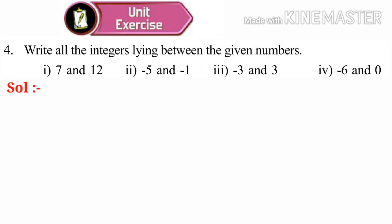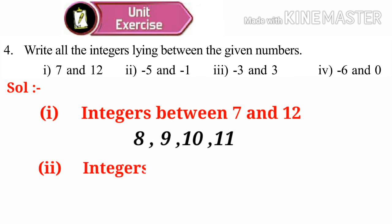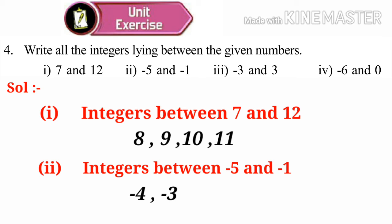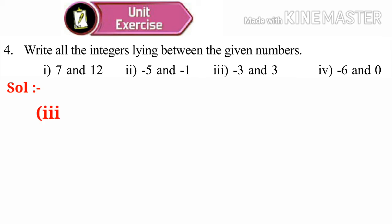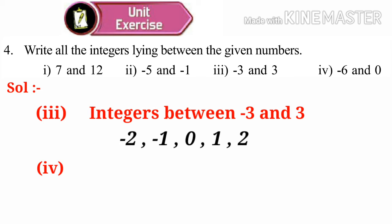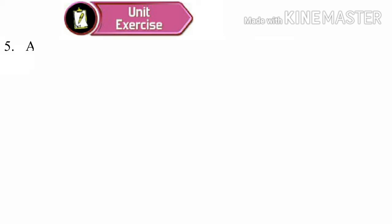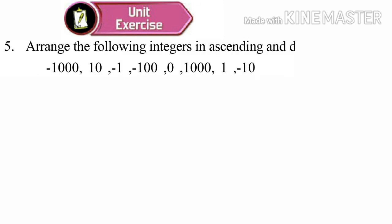Now, fourth problem: write all the integers lying between the given numbers. Solution number 1: integers between 7 and 12 — they are 8, 9, 10, and 11. Integers between minus 5 and minus 1 — on the right side of minus 5: minus 4, minus 3, minus 2. Number 3: integers between minus 2 and 2 — minus 1, 0, 1. Integers between minus 6 and 0 — minus 5, minus 4, minus 3, minus 2, minus 1.